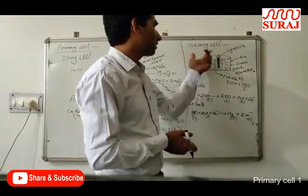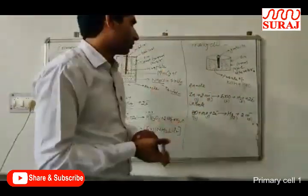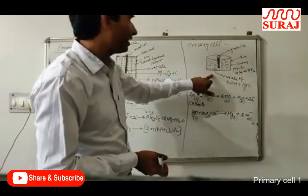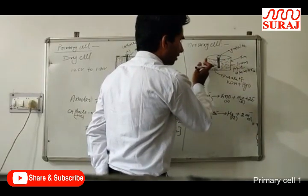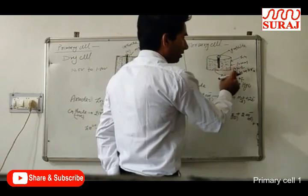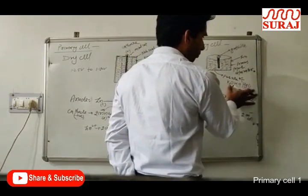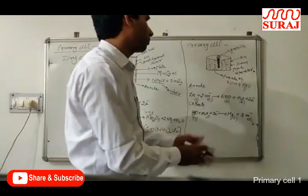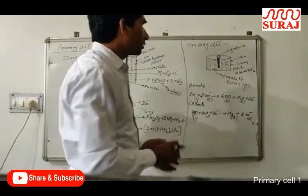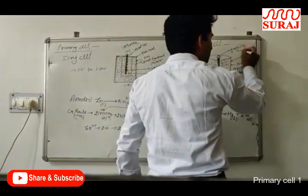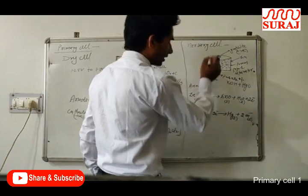The second primary cell is the mercury cell, also called the button cell, which we use in hearing aids and watches. In the construction, we have a graphite electrode and a zinc container with porous paper pasted inside as a separator, which separates the zinc from a paste of KOH and mercuric oxide (HgO). The graphite electrode acts as the cathode and the zinc container acts as the anode.